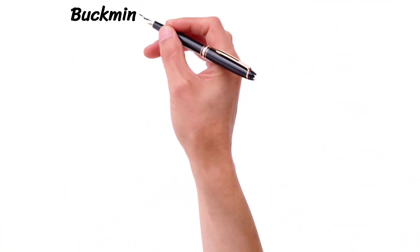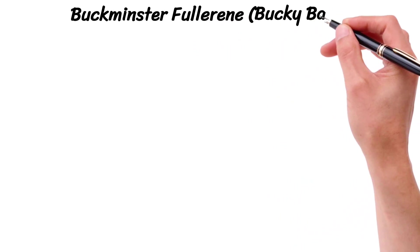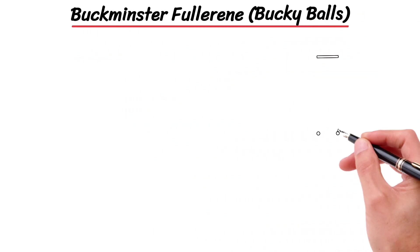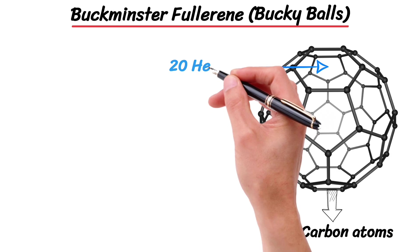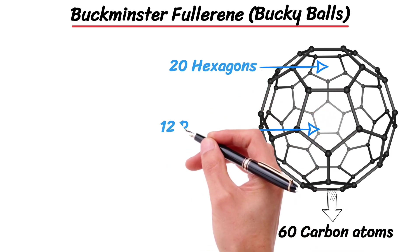Let me explain most important allotrope of carbon. Buckminsterfullerene, also known as buckyball. It is an allotrope of carbon consisting of 60 carbon atoms. It has a cage-like fused ring structure made of 20 hexagons and 12 pentagons.